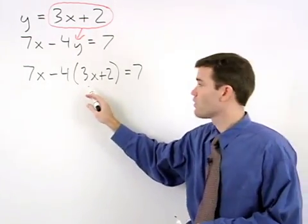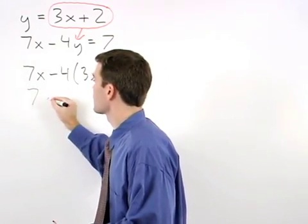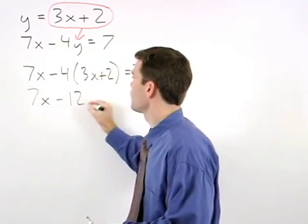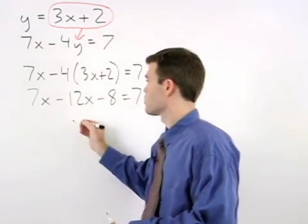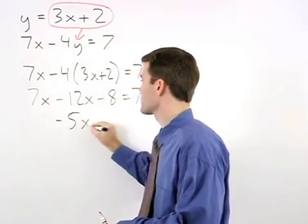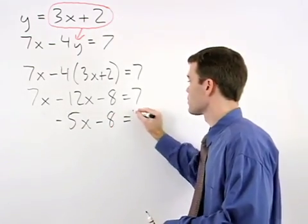If we simplify on the left side, we get 7x minus 12x minus 8 equals 7, which simplifies to negative 5x minus 8 equals 7.